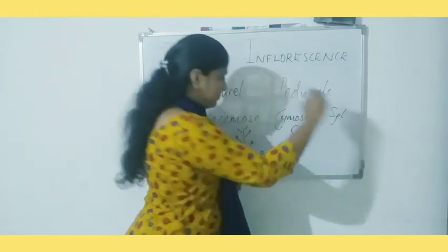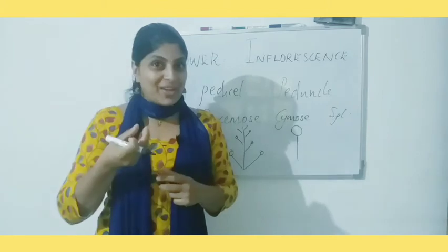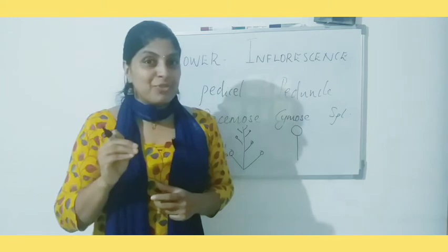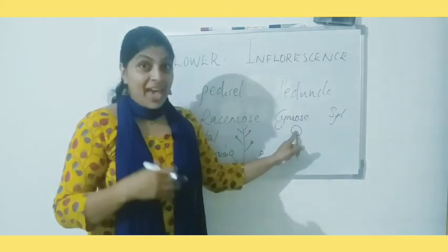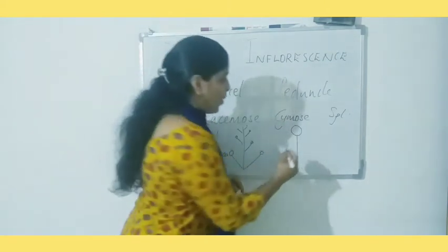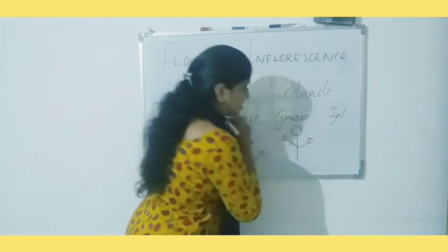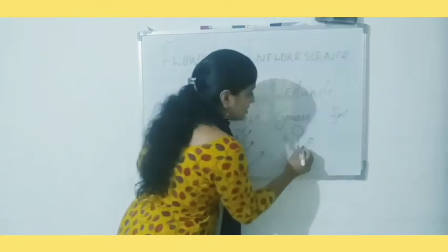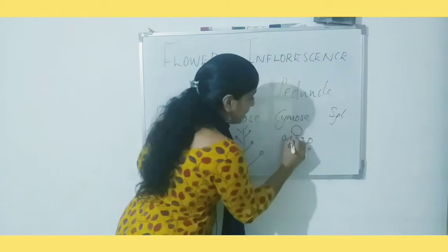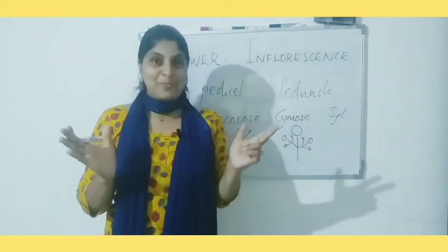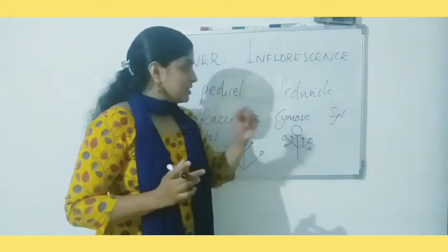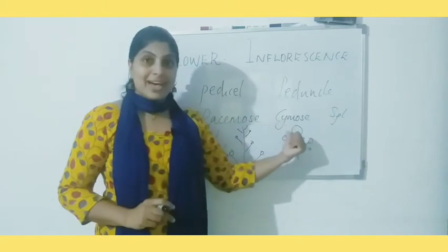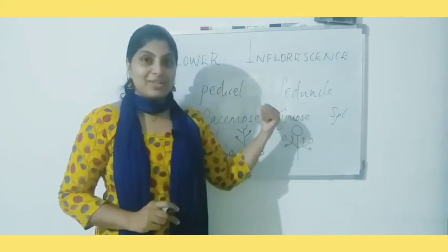In cymose inflorescence, a flower is born on a stock and the growth of that stock is stopped by the formation of that single flower. The next flowers are born on the lateral branches. Again, further florets form on side branches from the first two branches. This is the formation of flowers in cymose inflorescence.